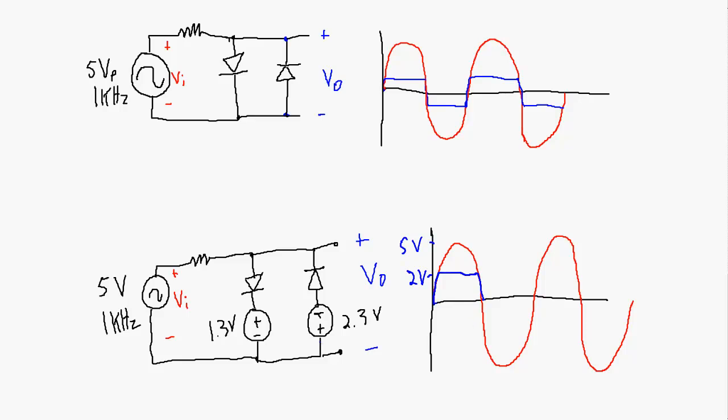Going into the negative cycle, this point has to be 0.7 volts above the other side, but we have the biasing offset from the 2.3-volt source. So the second diode will not become forward biased until the input signal gets 0.7 volts below negative 2.3 volts — in other words, at minus 3 volts. In the negative half of the cycle, the first diode will always be reverse biased. It's not until minus 3 volts that the second diode becomes forward biased, so we have clipping at that minus 3-volt point.